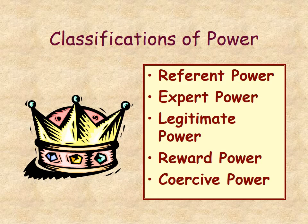There are also different classifications of power. Referent power is the power we give to another person — we hold them in high esteem and we want them to be our leader, so we give them referent power. Expert power comes from someone who is knowledgeable, like a nurse who has worked on a unit for 20 years and knows everything about how it functions, or teachers who have been in their role a long time and have advanced education.